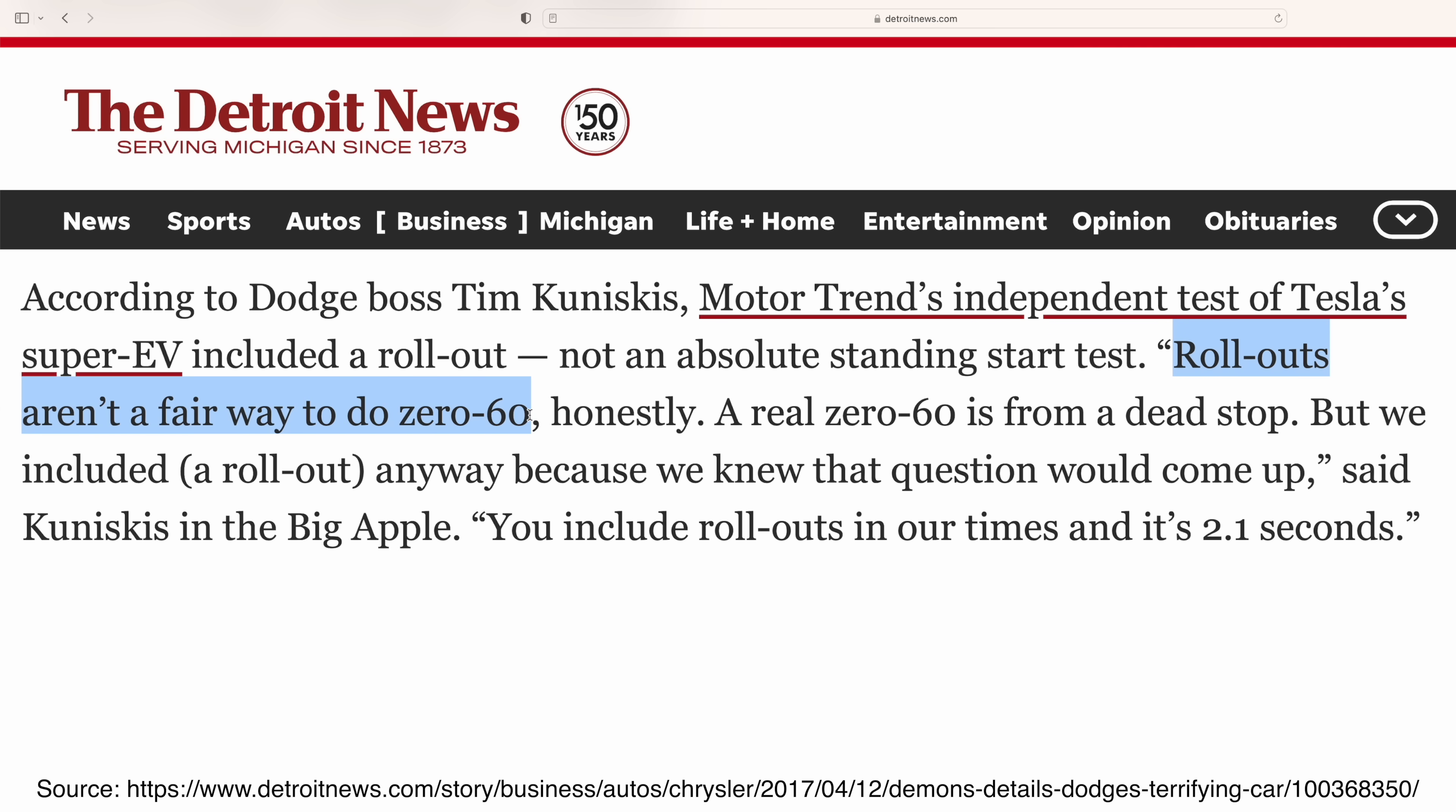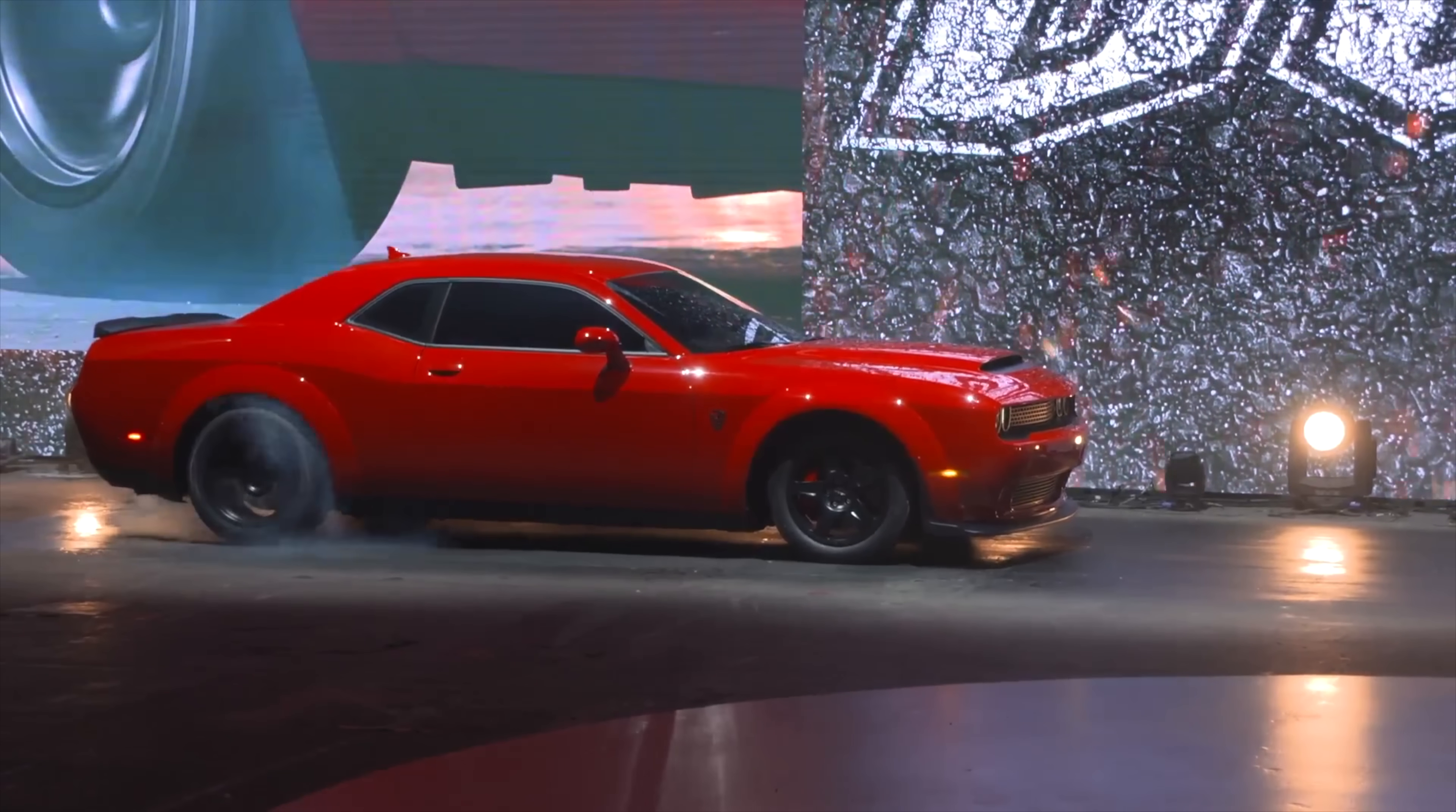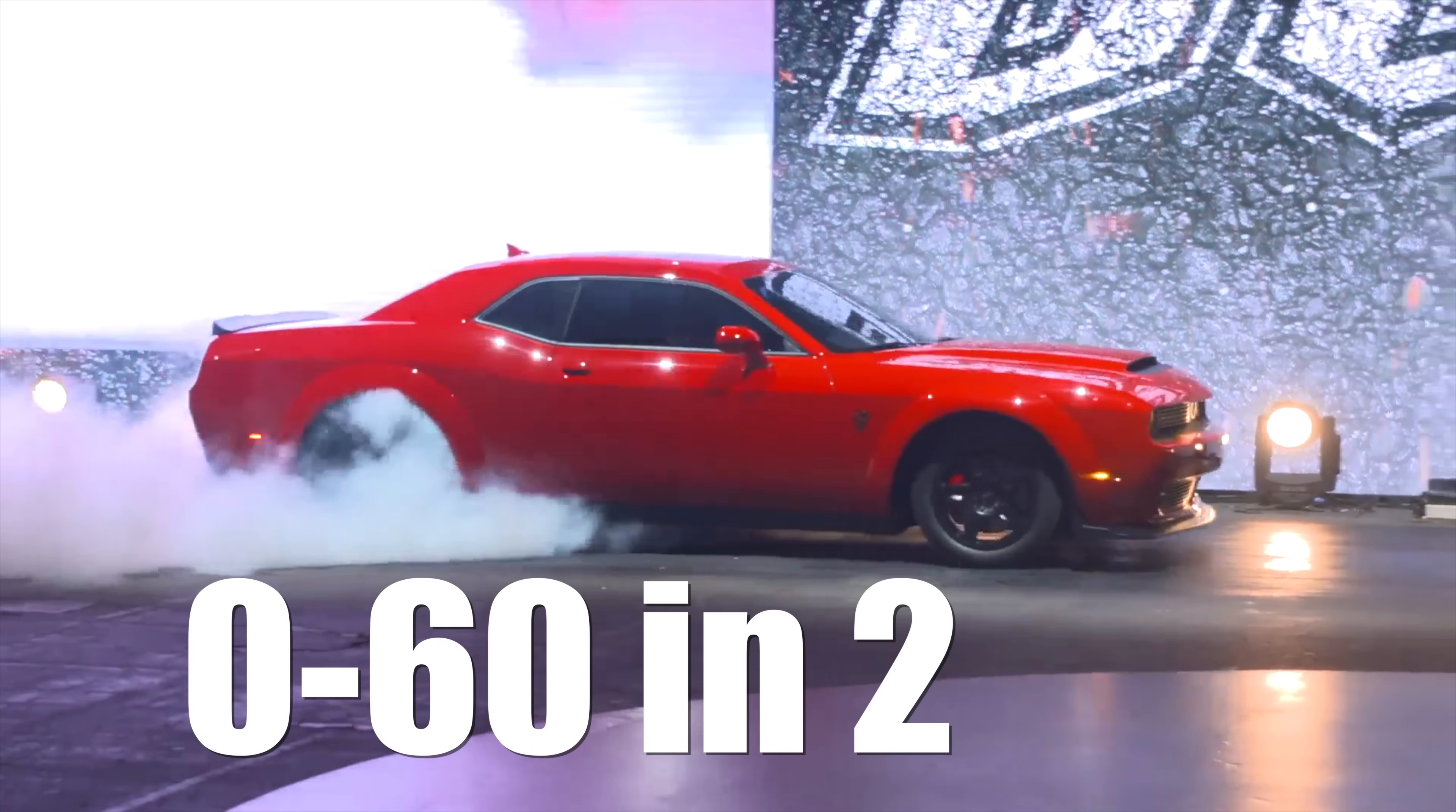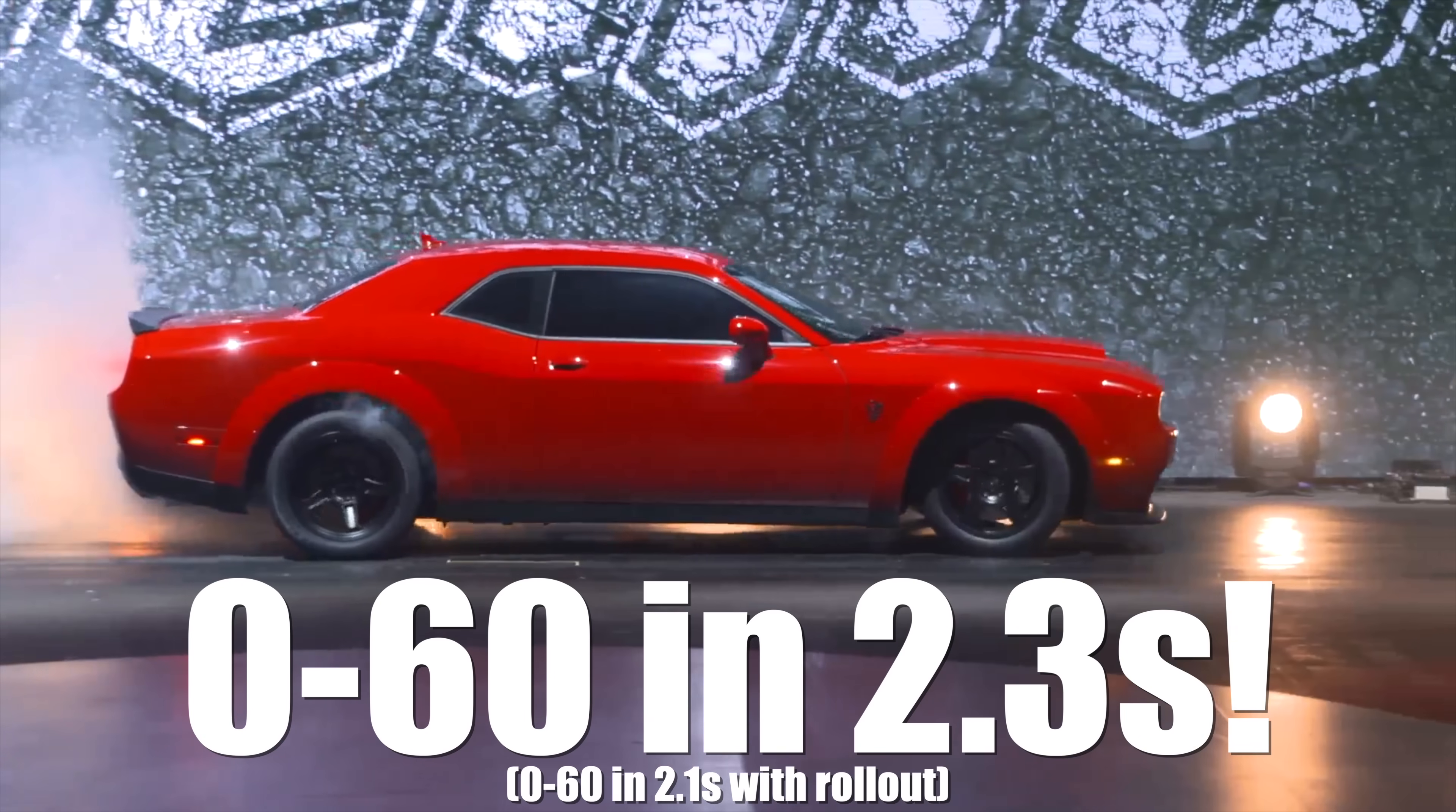Quote, rollouts aren't a fair way to do 0 to 60. Honestly, a real 0 to 60 is from a dead stop. Wait, what? So in 2017, Dodge cared about portraying their numbers in a fair way. So when they gave the 0 to 60 of the 2018 Demon at 2.3 seconds, it was truly from zero. No rollout nonsense.